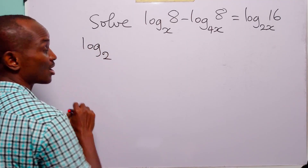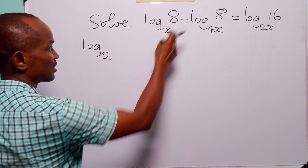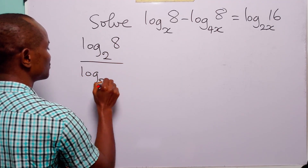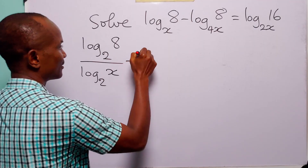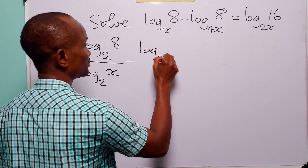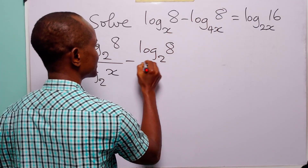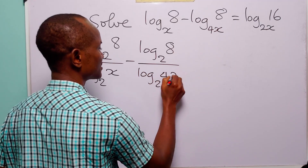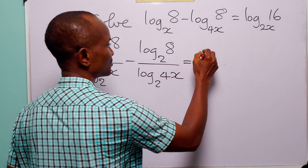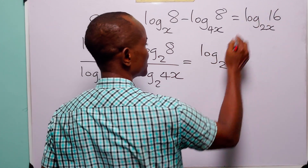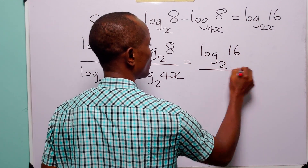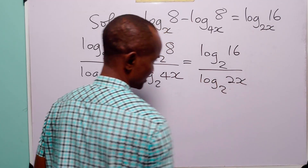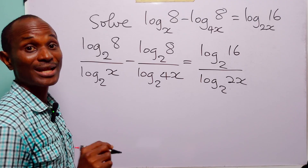When we apply the change of base formula to this logarithmic equation, we have log base 2 of 8 over log base 2 of the old base, minus log base 2 of 8 over log base 2 of the old base, is equal to log base 2 of 16 over log base 2 of the old base.